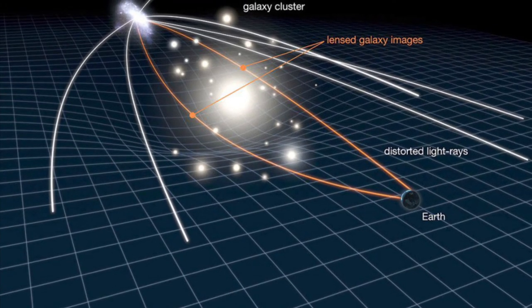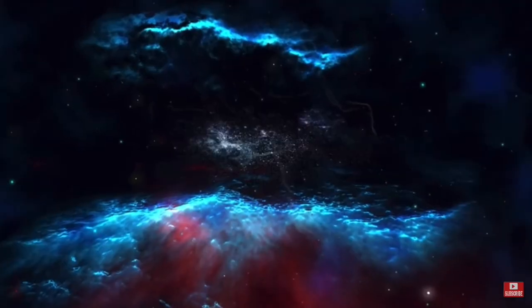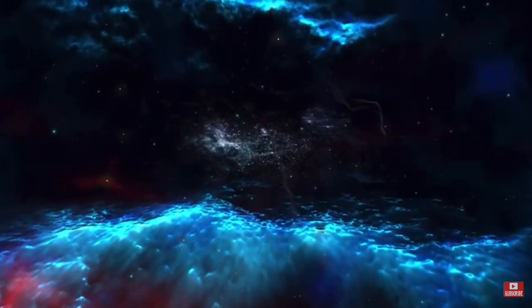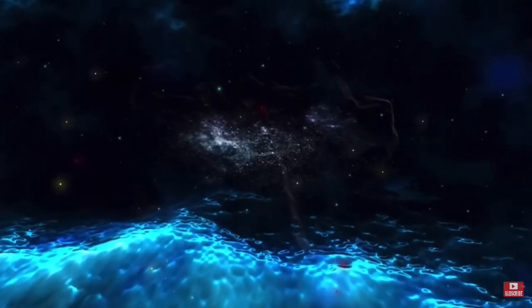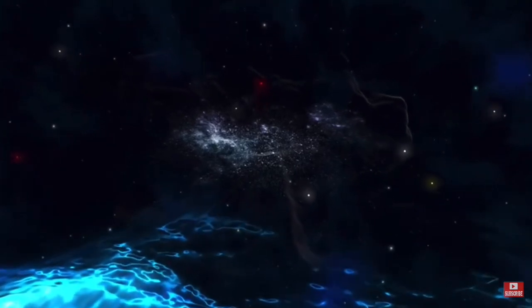Following that, we have Viewing of Exoplanets via Gravitational Lensing of the Sun, which is about how we're using the Sun as a gravitational lens to find exoplanets, because the resolution is much better than using other gravitational lenses.